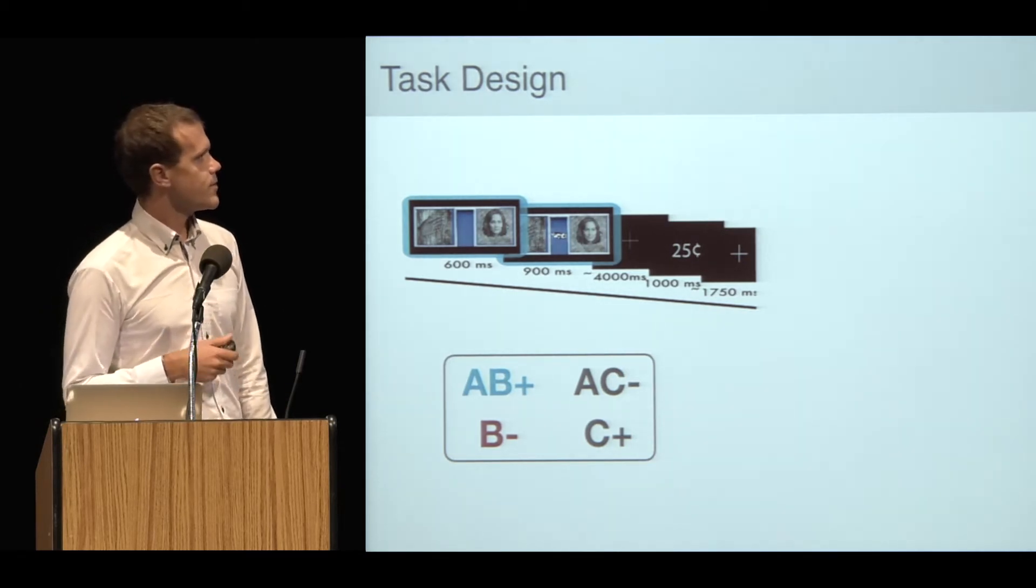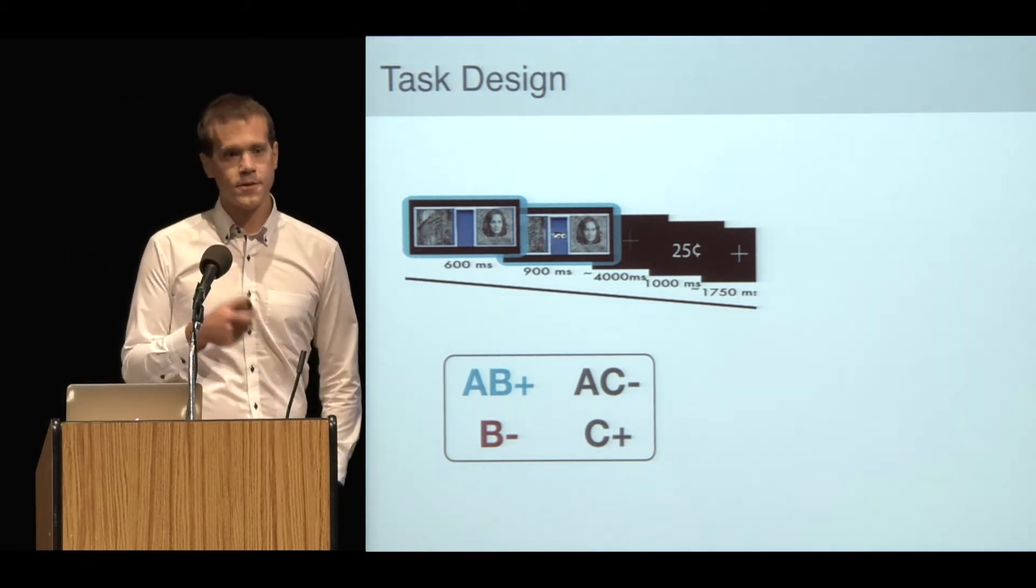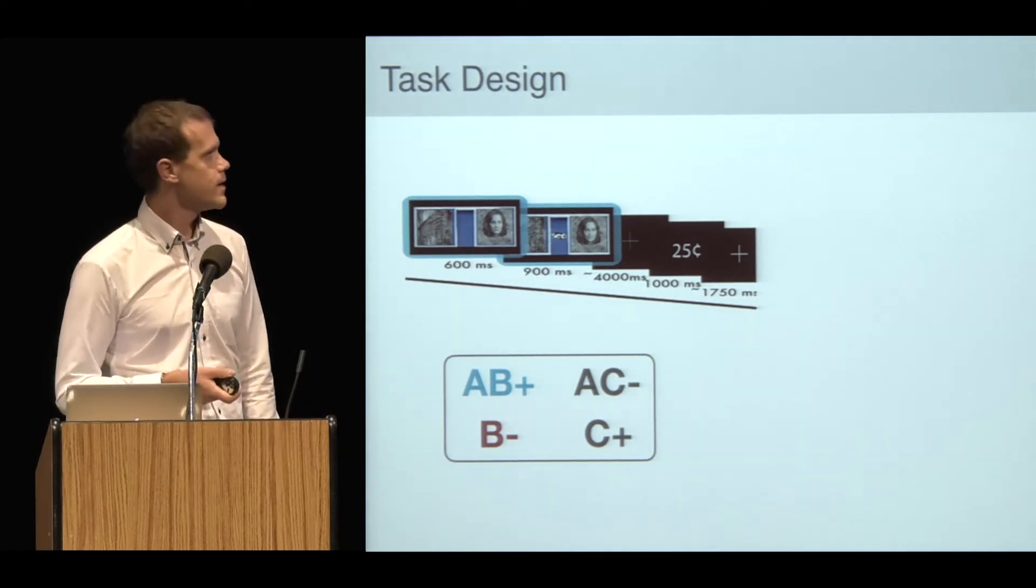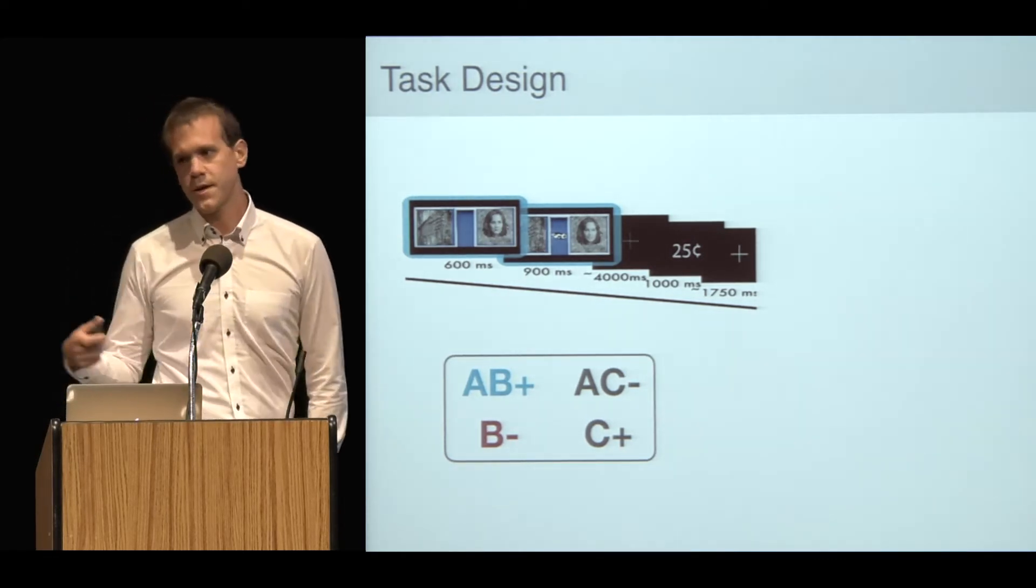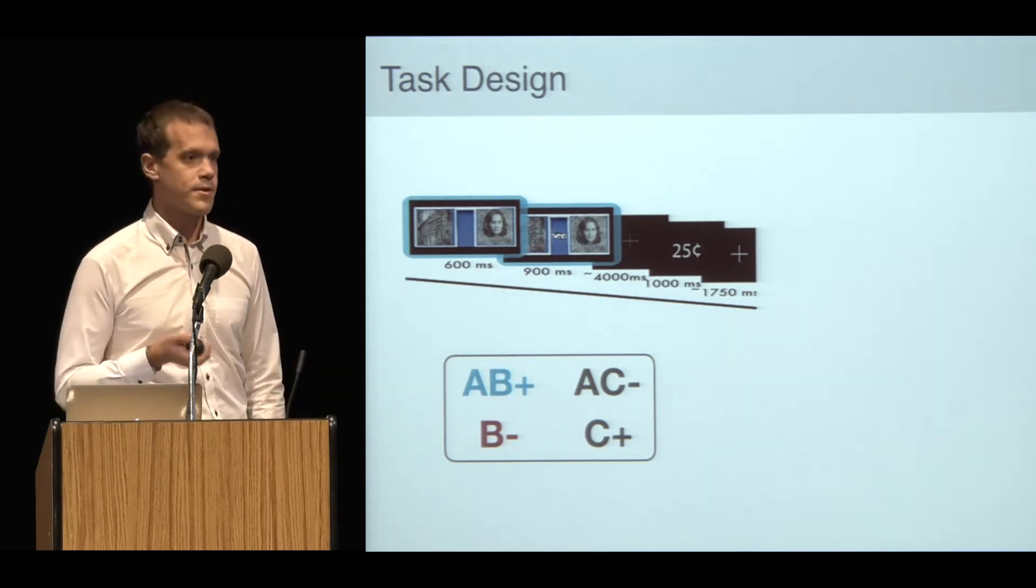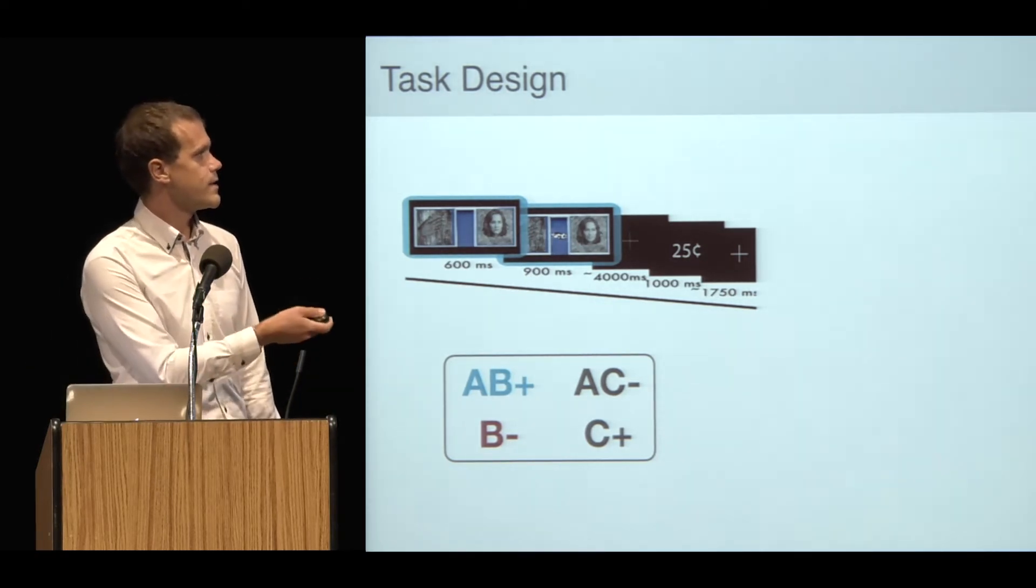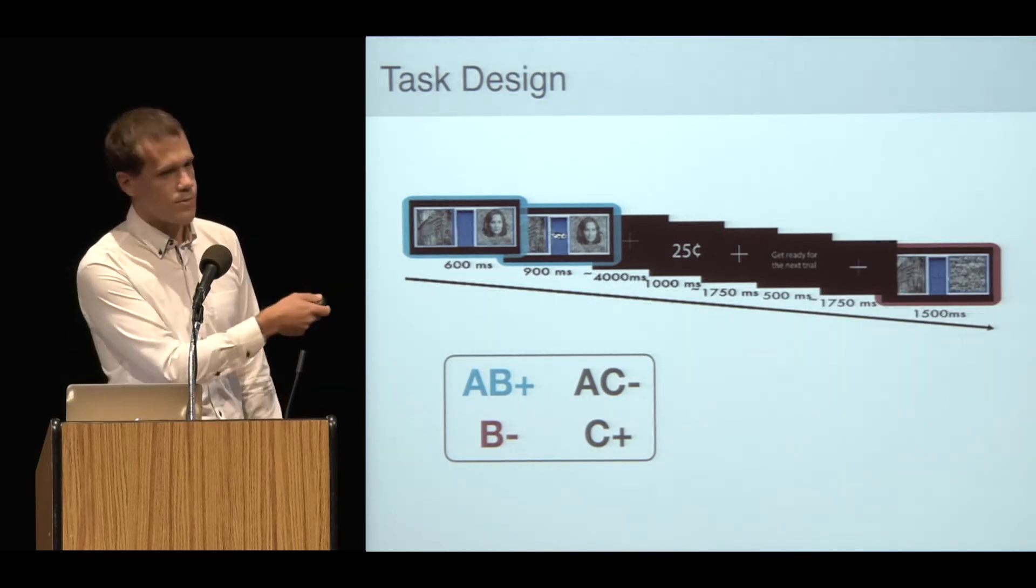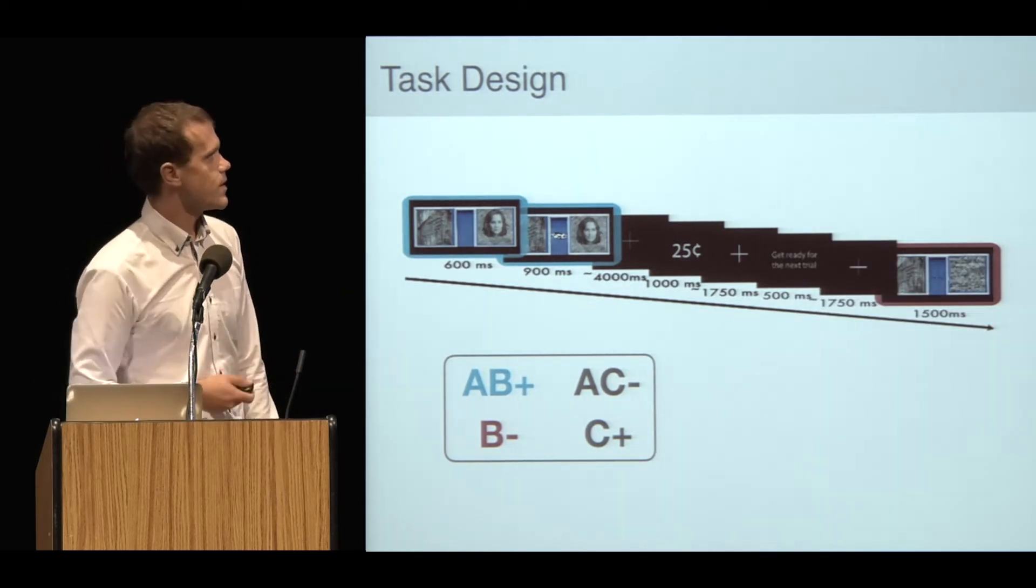The trick we play is that it's very difficult to respond quickly enough to get a reward if you just wait to look at the target. So in order to earn good money on this task, subjects need to learn the predictive relationships between the cues and the targets. Here's just an example of a B- trial with just the hand on its own, not leading to a target.